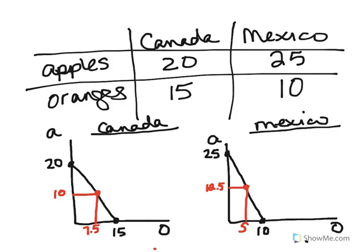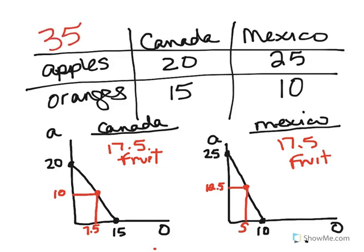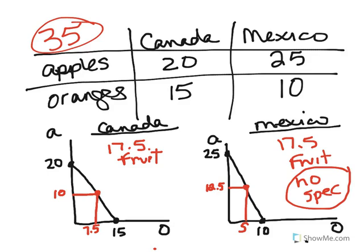Remember, the production possibility curve illustrates the maximum quantity of output that can be produced, so they can produce at any point along that curve. If they're devoting equal resources to both, they'll be right in the middle. So with no specialization, Canada produces a total of 17.5 pieces of fruit, and Mexico also produces 17.5 pieces of fruit. The total production with no specialization is 35 pieces of fruit. We're looking to see what total output is when there's no specialization.